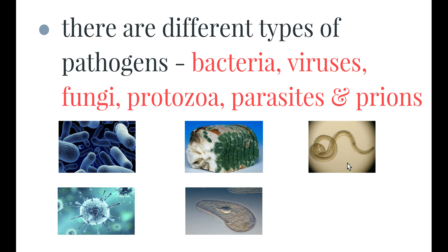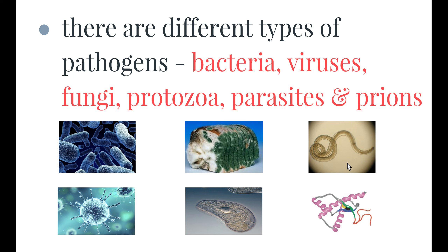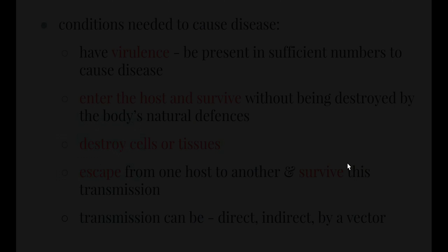We also have parasites: endoparasites that live inside the body and ectoparasites that live outside the body — not necessarily always disease-causing, but the majority of the time they are. Lastly, we have prions, which are probably the least common pathogens and ones you may never have heard of, unless you've heard of mad cow disease, which is actually caused by a prion — we'll look at that a little later.